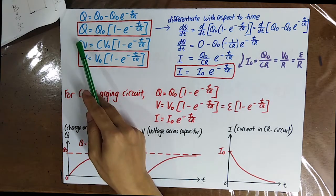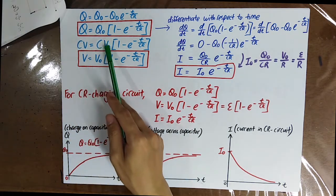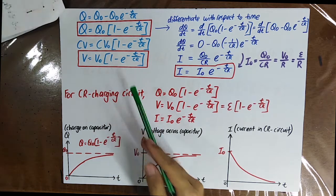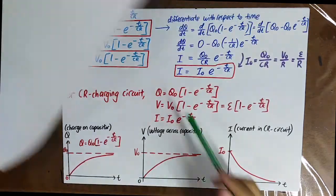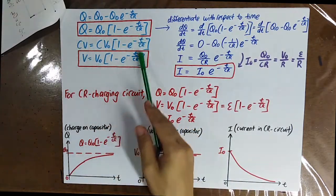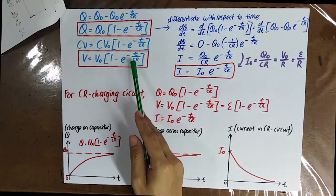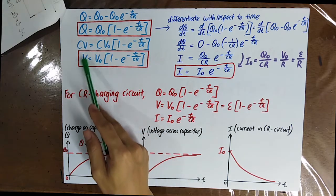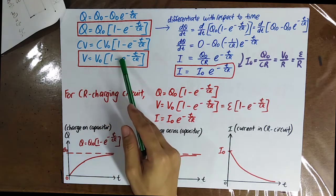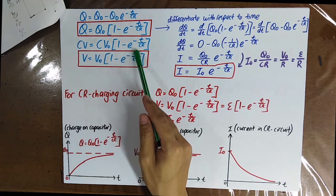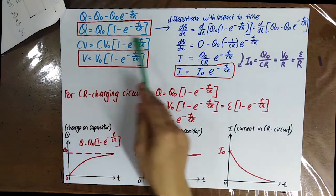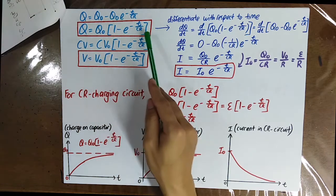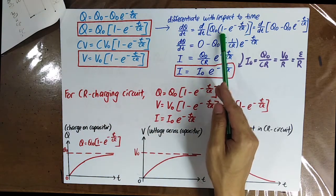Since Q equals CV and Q0 equals CV0 which equals CE, by using this formula you get another formula: V equals V0 bracket 1 minus e to the power of negative T over CR. From this formula, you differentiate with respect to time.